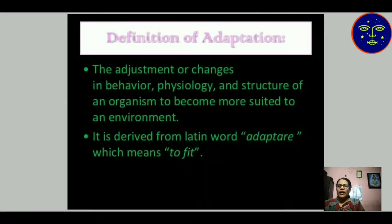The definition of adaptation: adaptation means adjustment or change in the behavior, physiology, and structure of an organism to become more suited to its environment. Adjusting an organism according to its environment is known as its adaptation. It is derived from the Latin word 'adapter,' which means to fit.